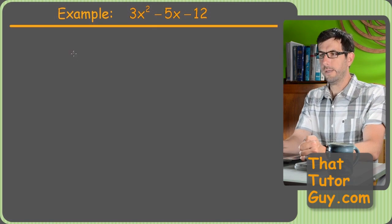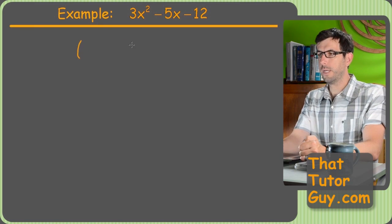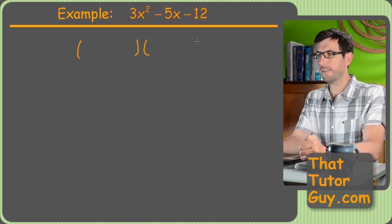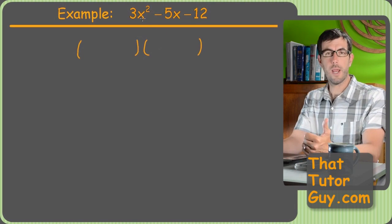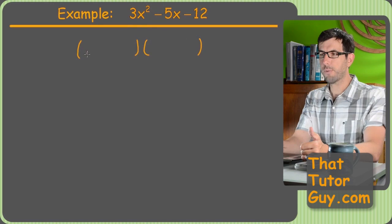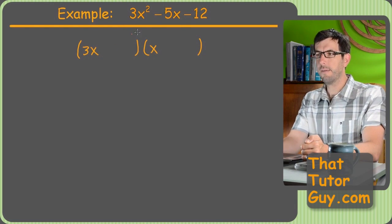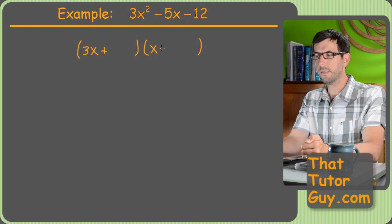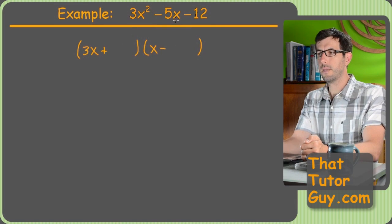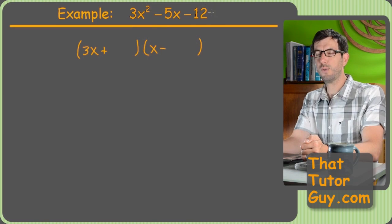Another example here. Do my usual sets of steps. 3x squared, there's only one option, is 3x and x, because 3 is a prime number. So I got 3x and x. The last sign is negative, so that means I have to do a plus and a minus. And I need to multiply to a negative 12.